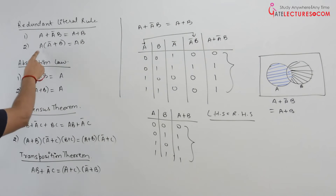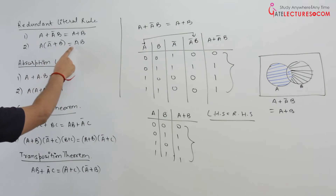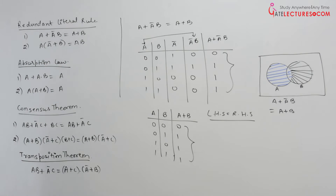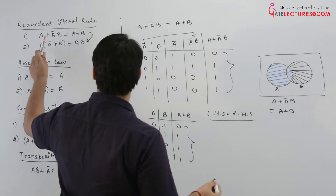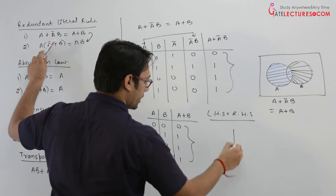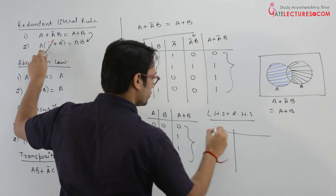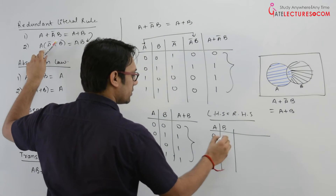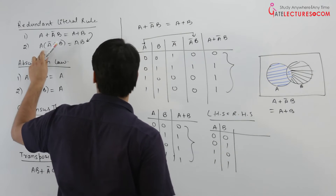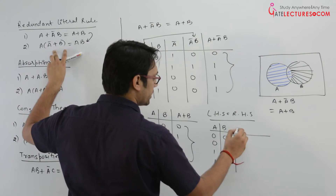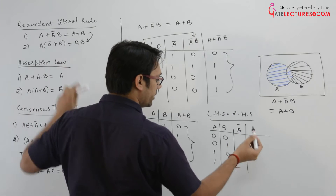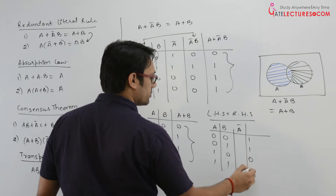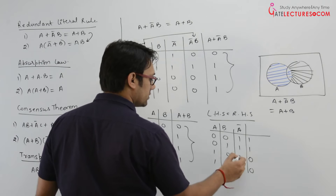Next is A dot A complement plus B equals AB. As you can see, this is just a dual form of the previous theorem, but still we can try to prove it. If this is A and this is B, their combinations can be 00, 01, 10, and 11. A complement can be 1, 1, 0, 0.